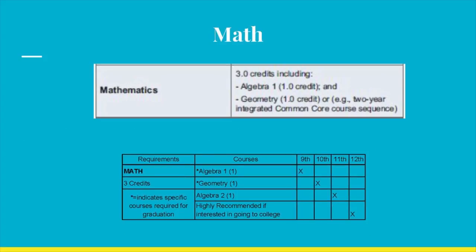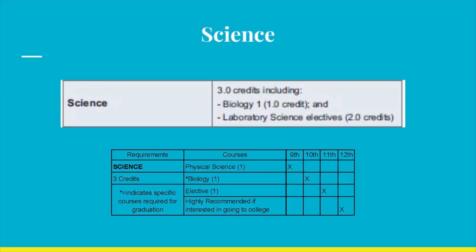Only three credits are required for math, two of which must be Algebra 1 and Geometry. If you are planning to attend college, you should take a fourth year of math, as a placement test will be given upon entry into college. Science requires only three credits as well, with one being in Biology. If you are planning to attend college, it is strongly recommended that you take a fourth science course in your senior year.